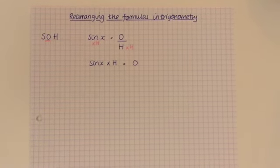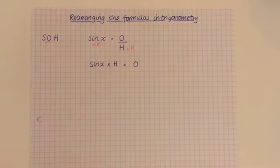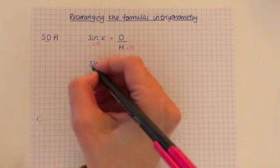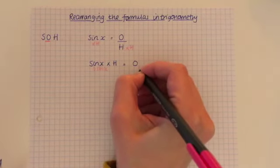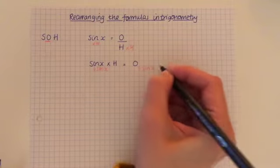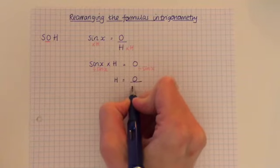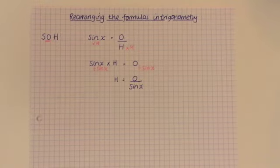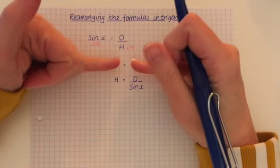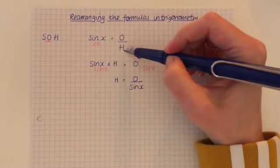So these are multiplied together now, so if I want to get H on its own, I've got to get rid of this times by sine X. So I divide by sine X each side. So what I end up with is that H equals O over sine X. So what we've got here is a trick, we can jump this step, and these two basically switch places.